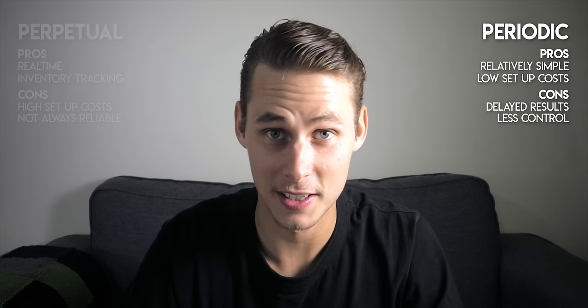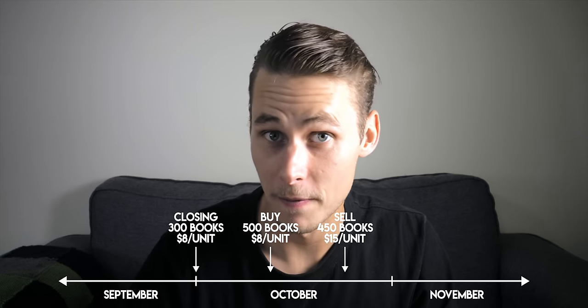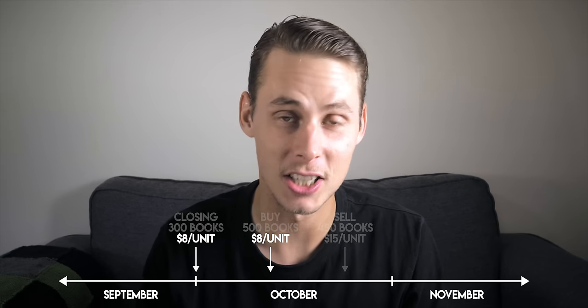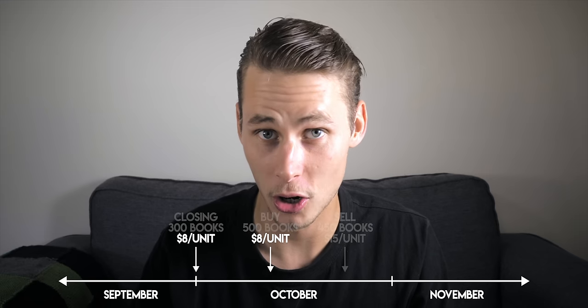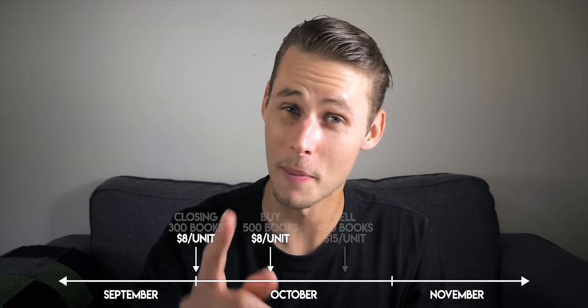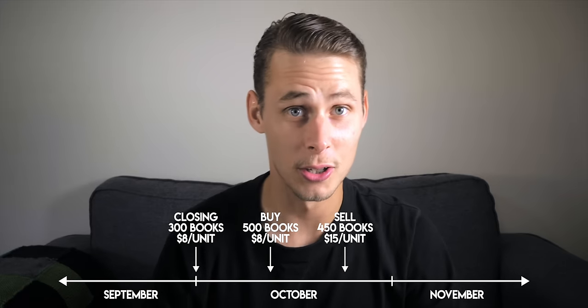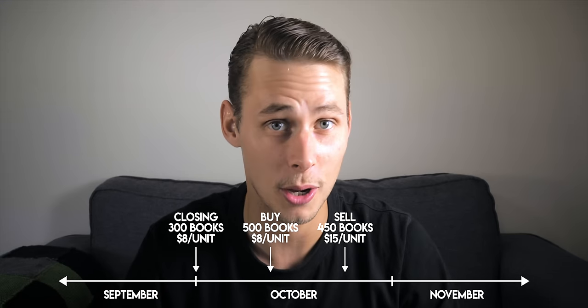Now I'm going to show you how the perpetual and periodic inventory systems work using an example. Imagine that you own a bookshop. It's the end of September and you're holding 300 books that cost you $8 per unit. In October, you buy another 500 books at the same price — $8 per unit — and you sell 450 books for $15 a unit. We're keeping the cost price exactly the same in this example. In the real world it changes, and we need to make assumptions using FIFO, LIFO, or average cost. But the question here is: how do you account for these transactions using the perpetual and periodic inventory systems, and what's your cost of goods sold in October?